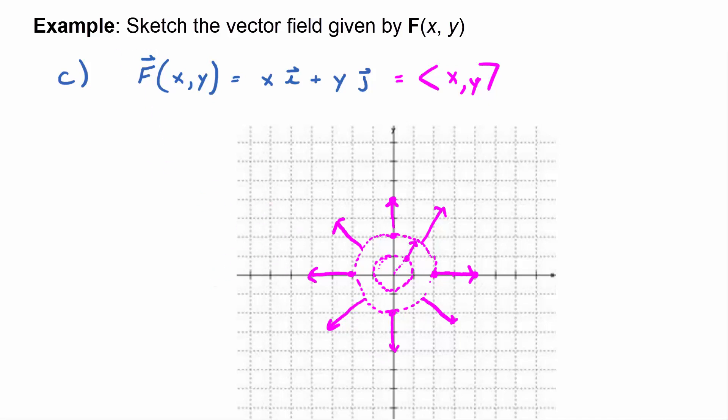So in other words, this vector field is a set of vectors that go radially out from the origin, the same magnitude that the input is from the origin. It looks something like that.